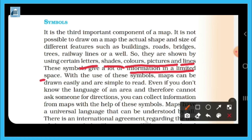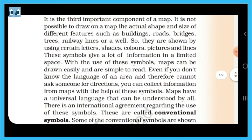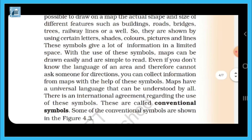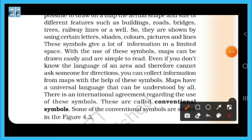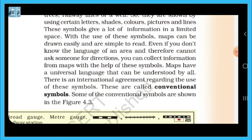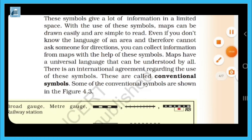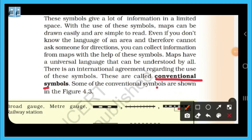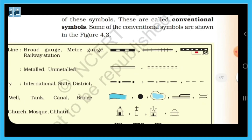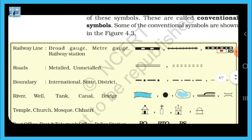Symbol maps can be drawn easily and are simple to read even if you don't know the language. Maps are a universal language. There is an international agreement regarding the use of symbols. These are called conventional symbols, which are shown on the map for all features.